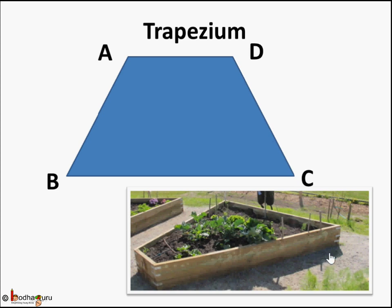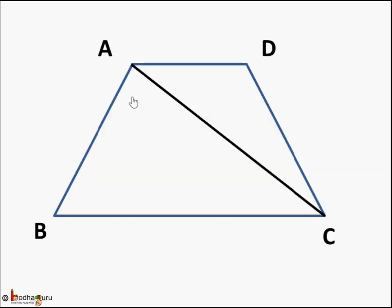Here is a real life trapezium, a nice garden block given here. Having this side parallel to this side but these two sides are not looking parallel. So how do we find its area?